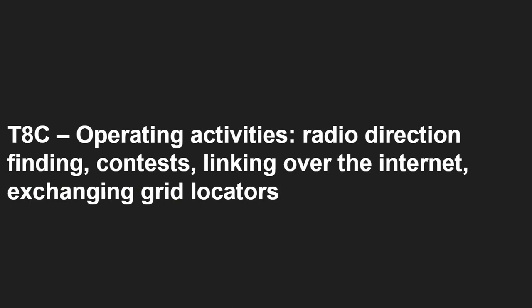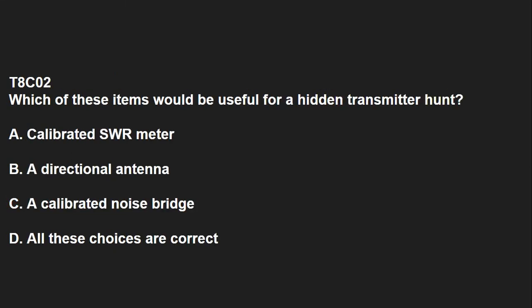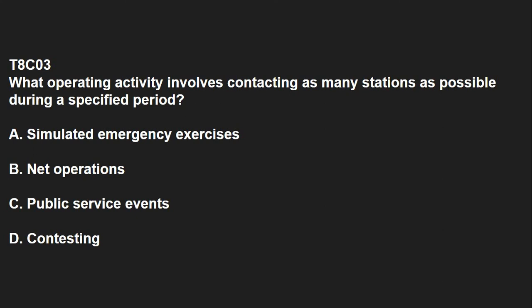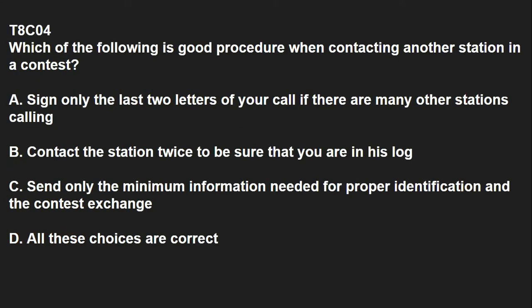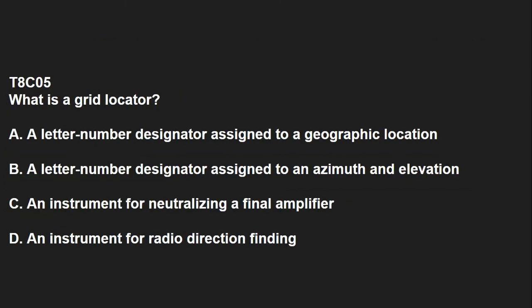T8C covers operating activities: radio direction finding, contests, linking over the internet, and exchanging grid locators. T8C01: Which of the following methods is used to locate sources of noise, interference, or jamming? Radio direction finding, also called fox hunting. T8C02: Which of these items would be useful for a hidden transmitter hunt? A directional antenna. T8C03: What operating practice involves contacting as many stations as possible during a specified period? Contesting. T8C04: Which of the following is a good procedure when contacting another station in a contest? Send only the minimum information needed for proper identification and the contest exchange. T8C05: What is a grid locator? A letter number designator assigned to a geographic location.